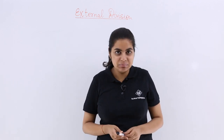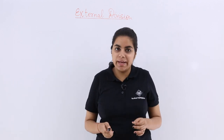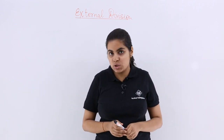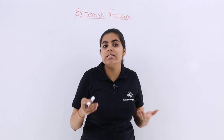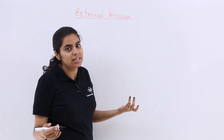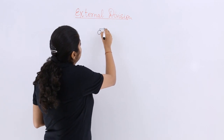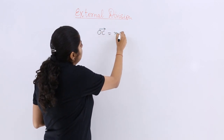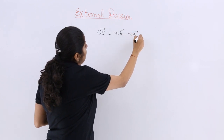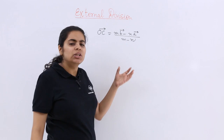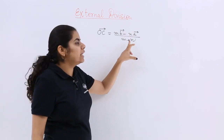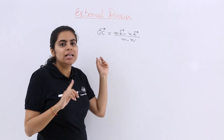Now I have a point C which is going to divide this particular AB line segment externally in the ratio m is to n. So what is the position vector according to the external division? OC would be equal to m of b minus n of a upon m minus n. The only difference with respect to internal division is the minus sign is used here instead of the plus sign.